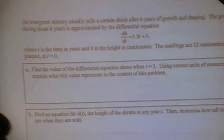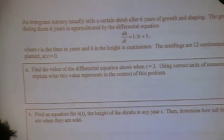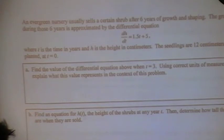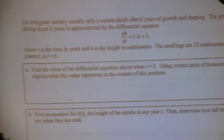An evergreen nursery usually sells a certain shrub after six years of growing and shaping. The growth rate during those six years is approximated by the equation dH over dt — so this is like a related rate problem. dH over dt is the first derivative, giving us the rate at which it's growing, where t is time in years and H is height in centimeters. The seedlings are 12 centimeters tall when planted at t equals 0, so the point (0, 12) is given. Find the value of the differential equation when t is 3.